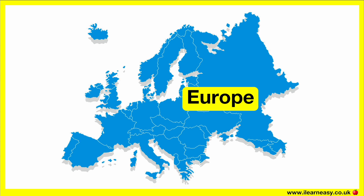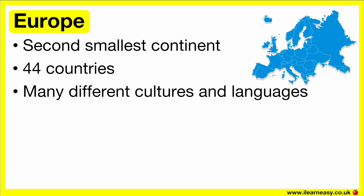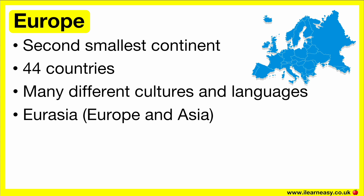Europe is the sixth largest continent. There are 44 countries in Europe, which are home to a quarter of the world's population. Many different cultures and languages exist in Europe. Sometimes people think of Europe and Asia as a single continent, and they call this Eurasia.